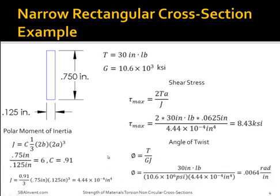Now that I know what the polar moment of inertia is, I can solve for the shear stress. The shear stress in this case is 8.43 ksi. I can also now solve for the angle of twist, and the angle of twist is 0.0064 radians per inch.